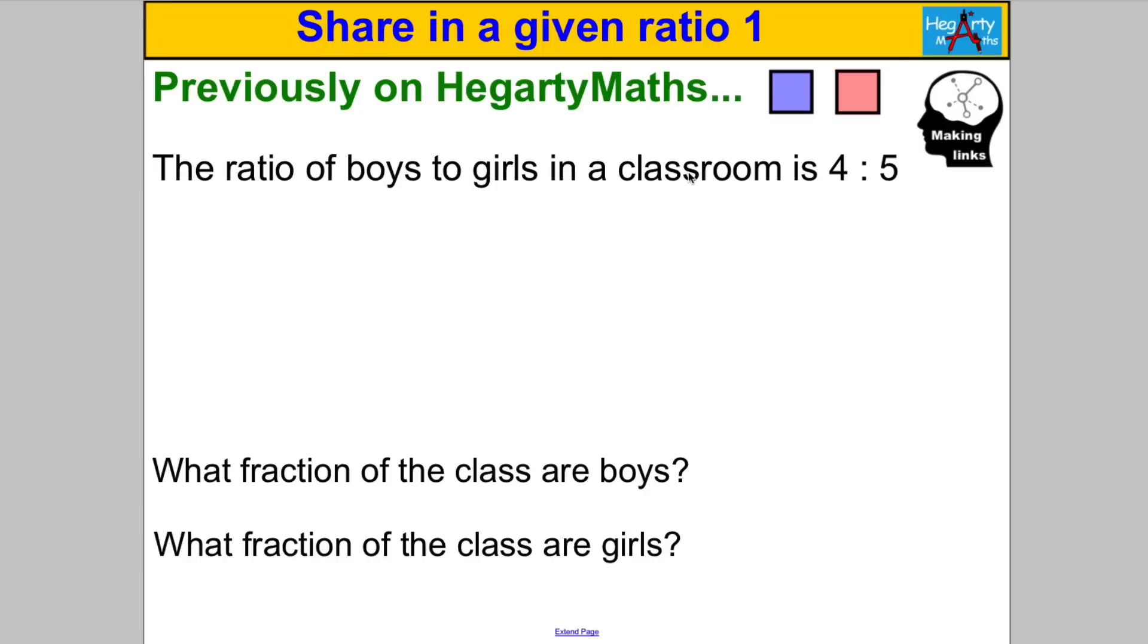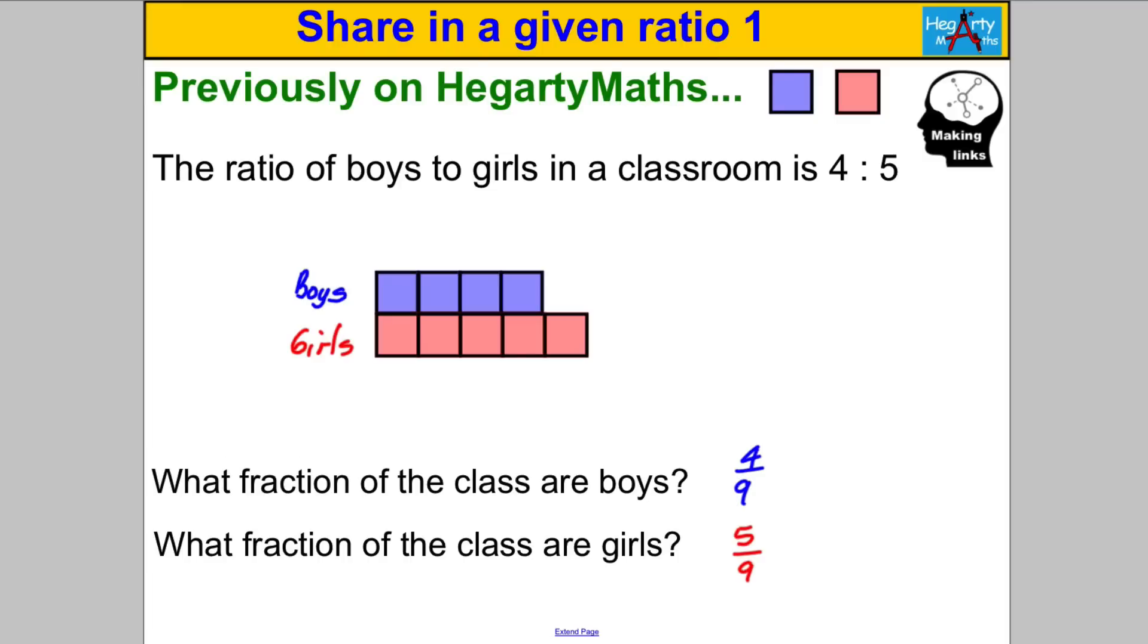So that's converting a ratio to a fraction. Perhaps you drew yourself the model, the box model here, and you would have got yourself four ninths and five ninths. Four out of a total of nine in the group were boys, five out of a total of nine in the group were girls.